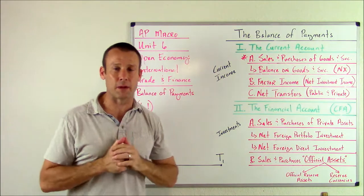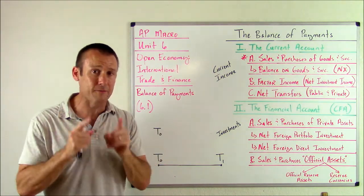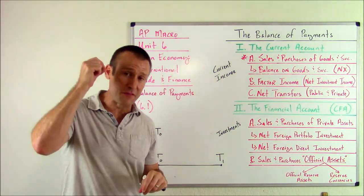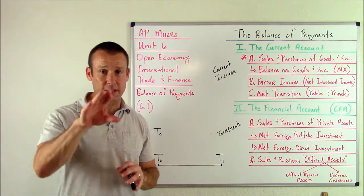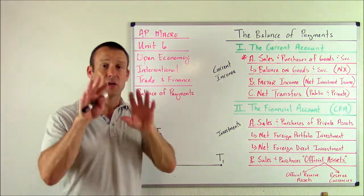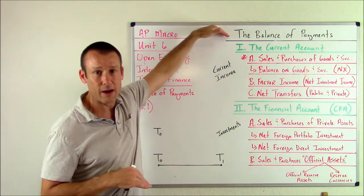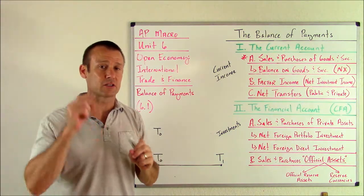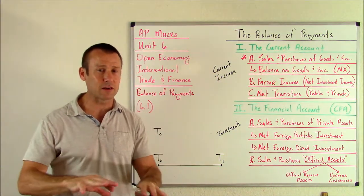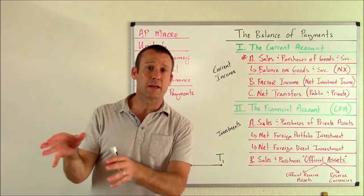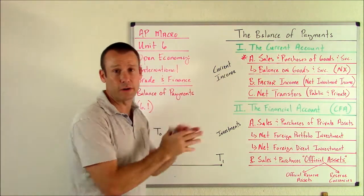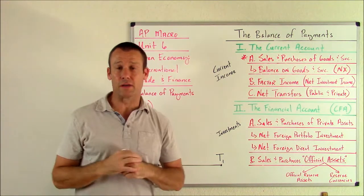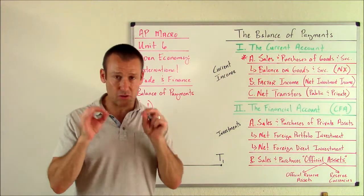What the heck is the balance of payments? The balance of payments is where we record every international transaction. If money is going out of the country or into a country, it gets recorded in that country's balance of payments. Every country has a balance of payments — for this video, let's assume this is the U.S. balance of payments. Only international transactions get recorded here, not domestic ones. If I go to McDonald's down the corner and get a milkshake, that doesn't go here. But if Ford Motor Company sells a car abroad, that gets recorded here.